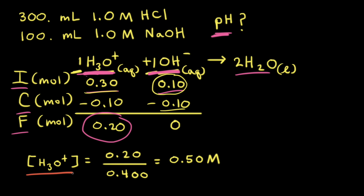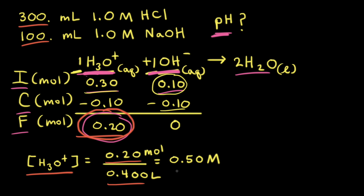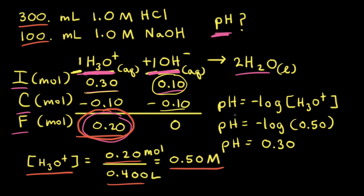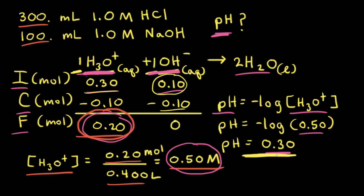Next, we calculate the concentration of hydronium ions in solution. We have 0.20 moles of hydronium ions. The total volume is 300 mL + 100 mL = 400 mL = 0.400 L. So the molarity = 0.20 mol / 0.400 L = 0.50 M. The pH = −log[H₃O⁺] = −log(0.50) = 0.30. Having a low pH makes sense because we ended up with an excess of acid.